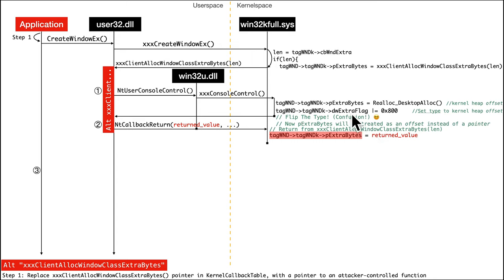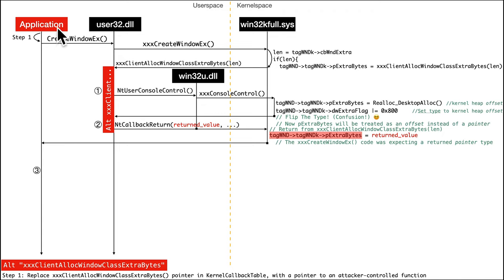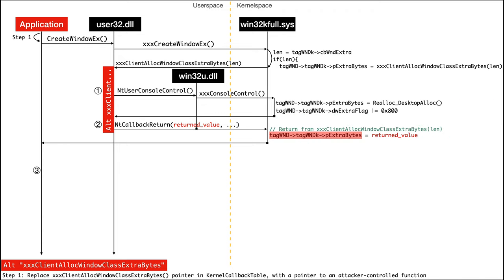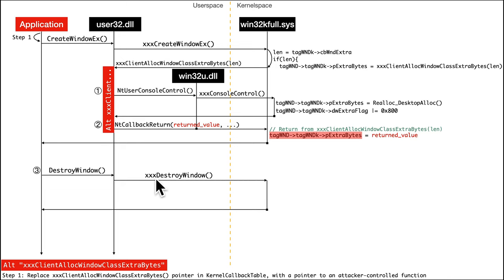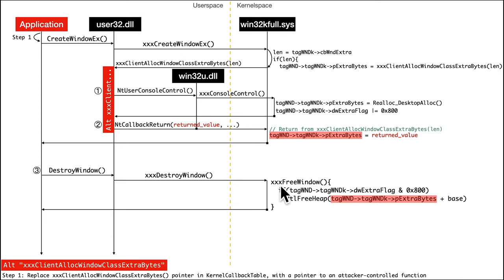What can an attacker do with that? Now that pExtraBytes is ACID and there's type confusion about its proper interpretation — once this function returns, the attacker from their malicious application can call a completely different function. If they selected DestroyWindow, which calls into xxxDestroyWindow in kernel space, it would subsequently call into xxxFreeWindow. Inside there, if tagWNDK's dwExtraFlags has bit 11 set, it calls free on that completely attacker-controlled offset plus base.